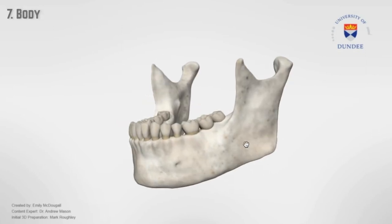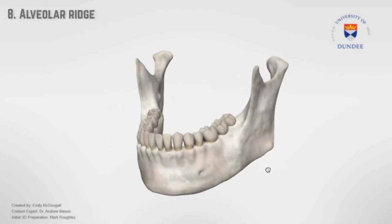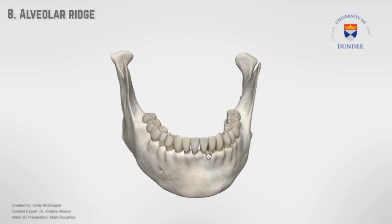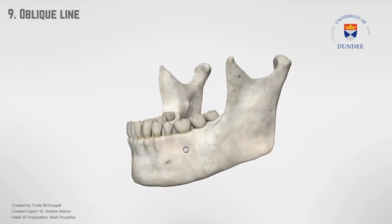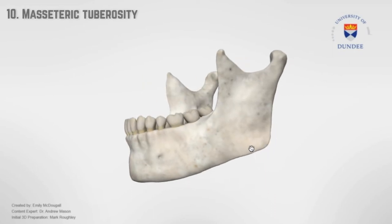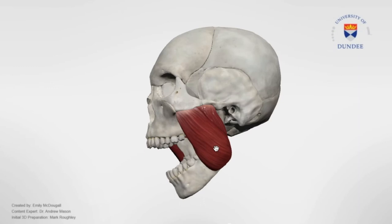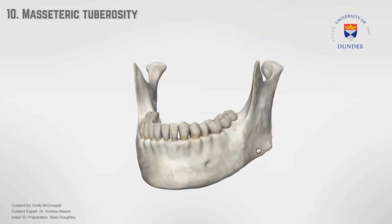Body — this is the bulk of bone anterior to the angle and ascending ramus. Alveolar ridge forms the superior margins of the body of the mandible into which the teeth insert. Oblique line demarcates the junction of the alveolus and the ramus of the mandible. Masseteric tuberosity is a rough area for the attachment of the masseter muscle on the external surface of the gonial angle.